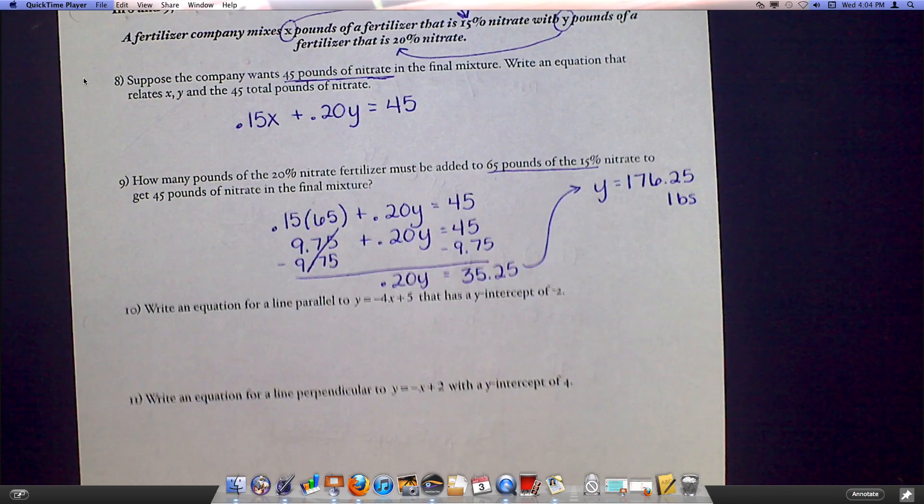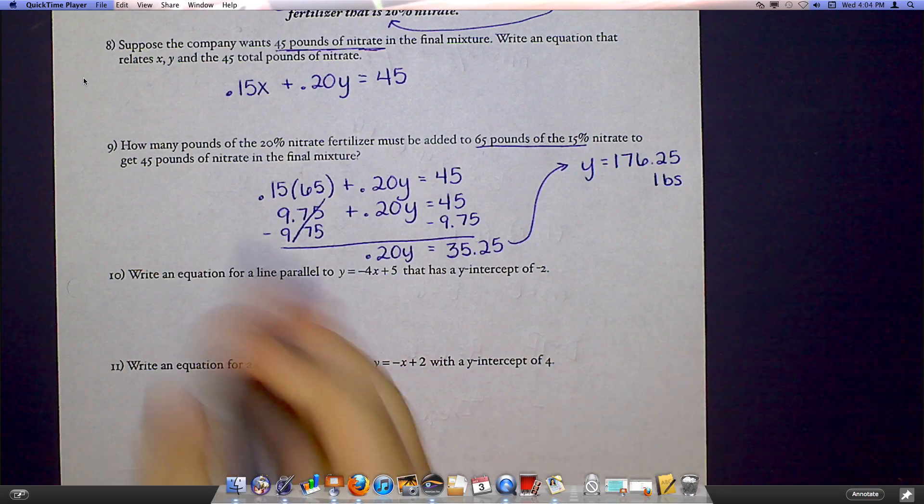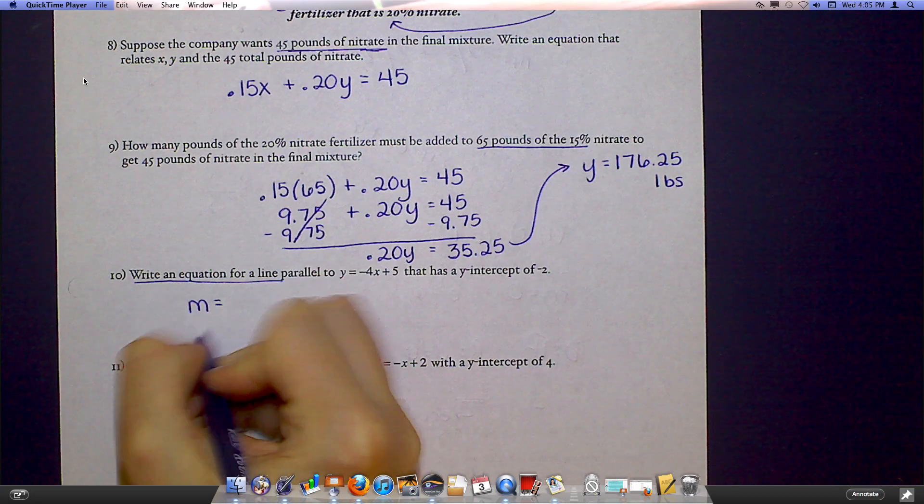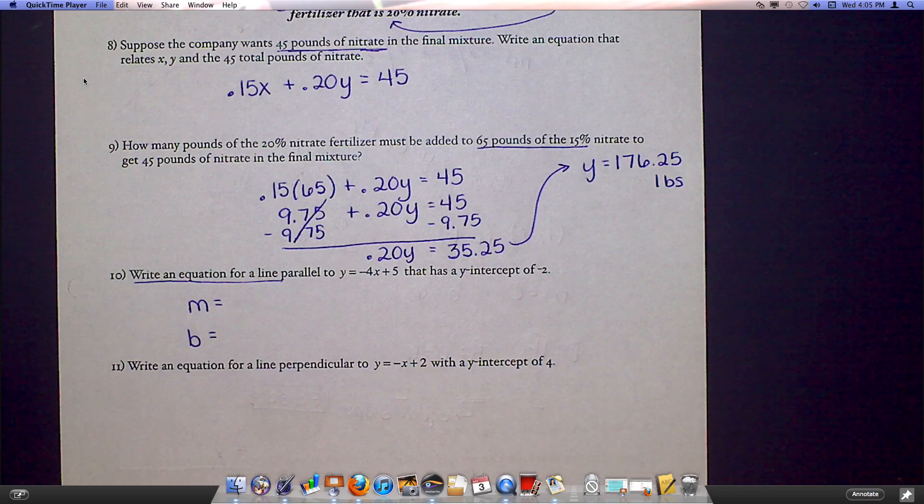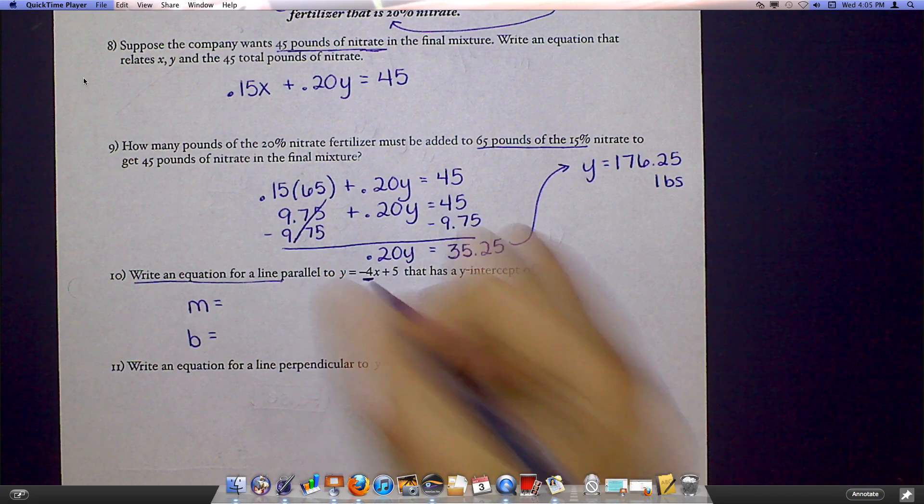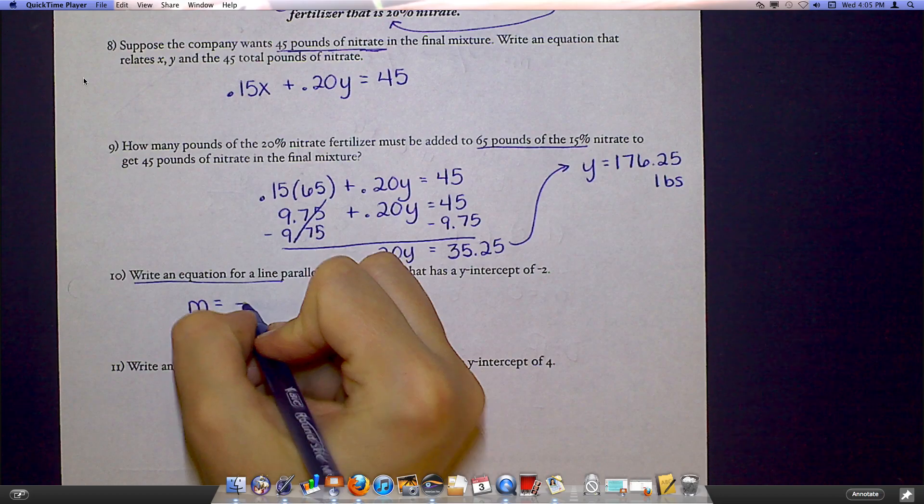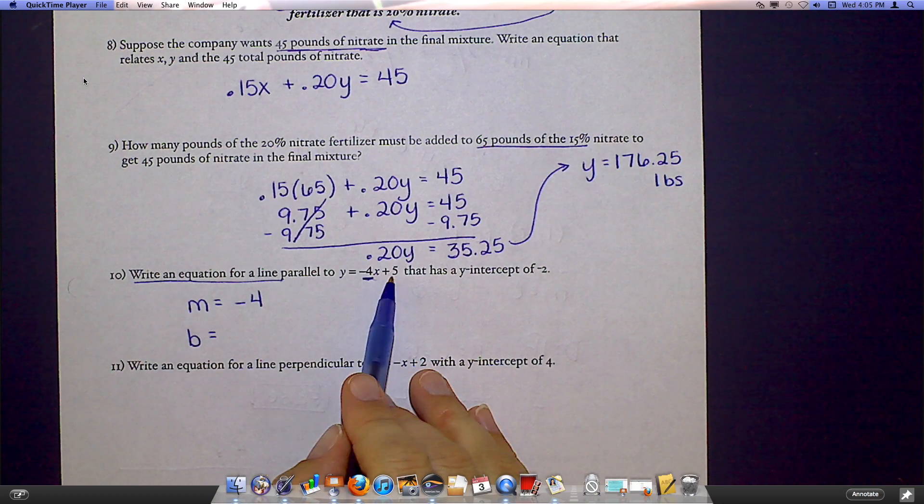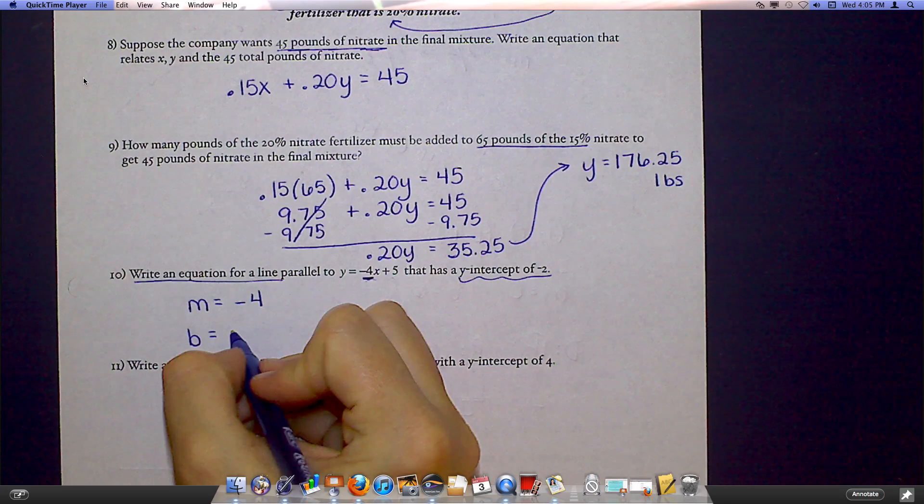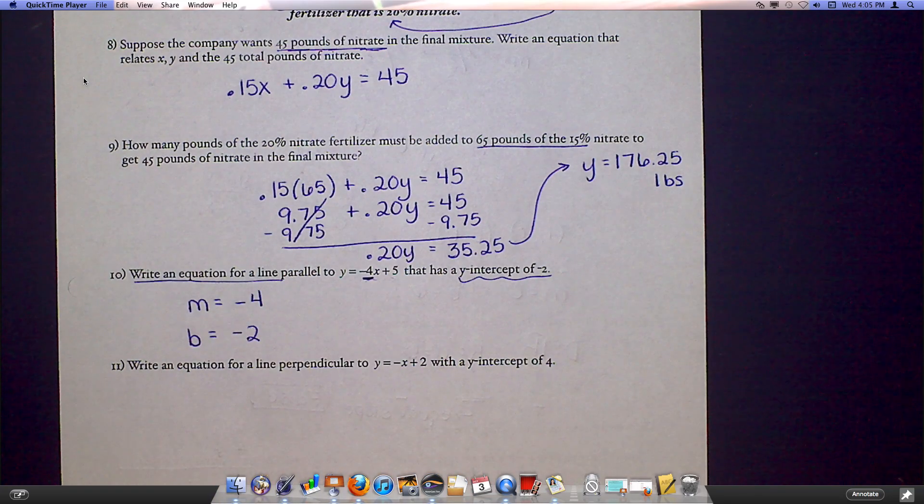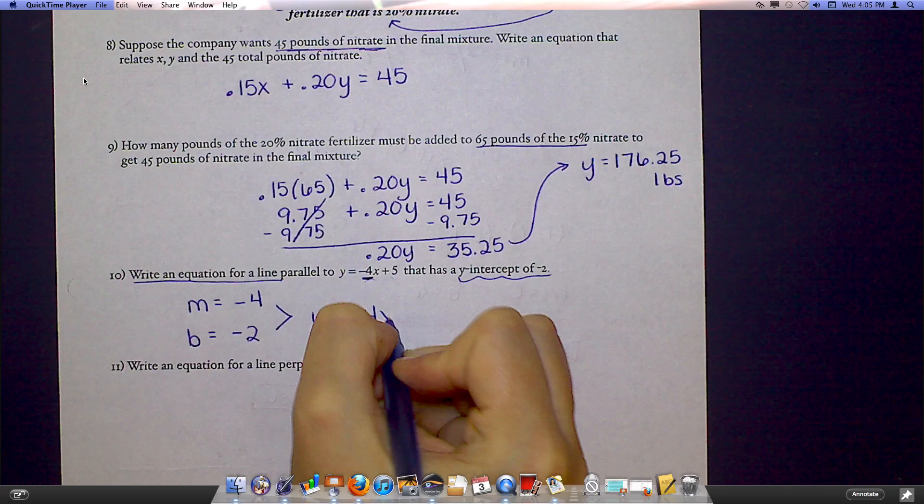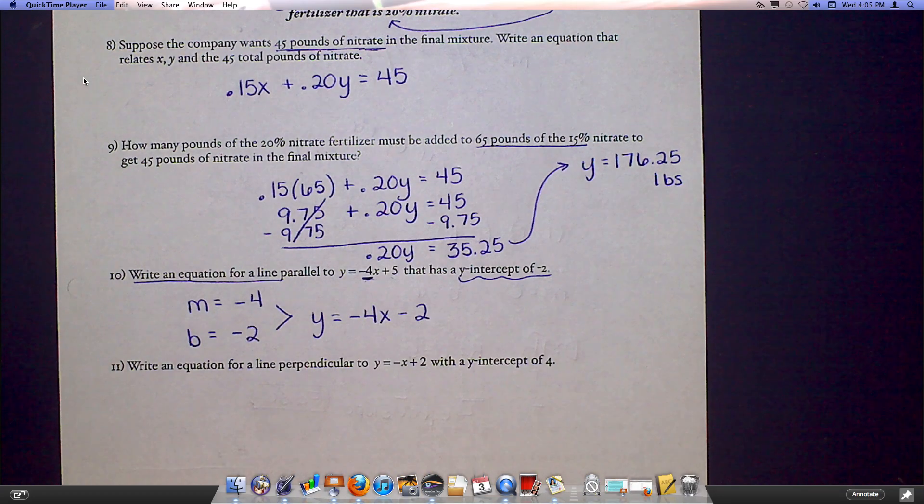For 10 and 11, as soon as I see the words write an equation for a line, I know that I need an M and I need a B. So if it's parallel to this line, I know that I want to use this exact same slope, so that negative 4 is going to become my M, but I don't care about the rest of this line. The only thing I care about is the slope. It tells me down here that my Y intercept is negative 2, so that's my B. Once I have those two things, I can say Y equals negative 4X minus 2.